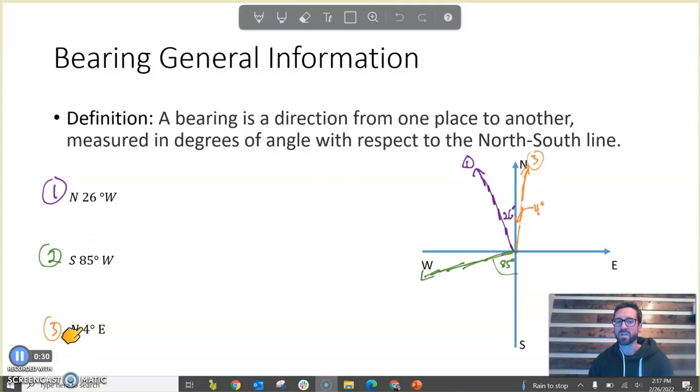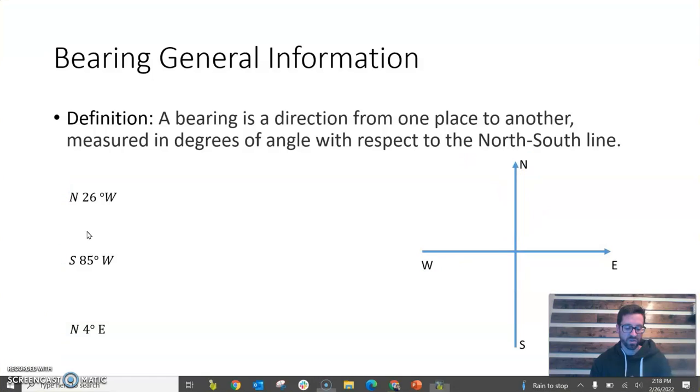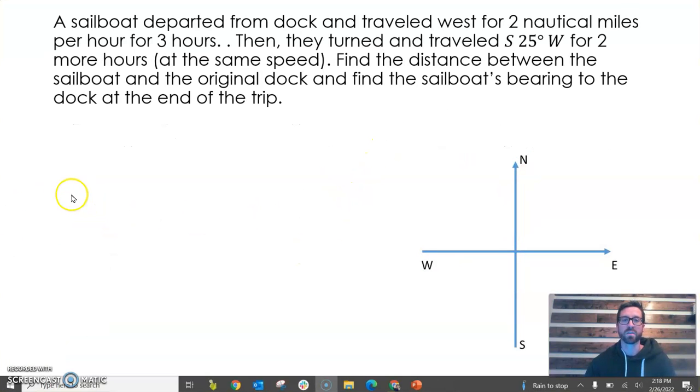So once we know how to read and interpret these bearings, we can actually solve some math problems involving those bearings. And so here's our example. A sailboat departed from dock and traveled west for two nautical miles per hour for three hours. Then they turned and traveled south 25 degrees west for two more hours at the same speed. Find the distance between the sailboat and the original dock and find the sailboat's bearing to the dock at the end of the trip. So we got two parts. We're going to find the distance, and then once we're done, we're going to find the bearing.